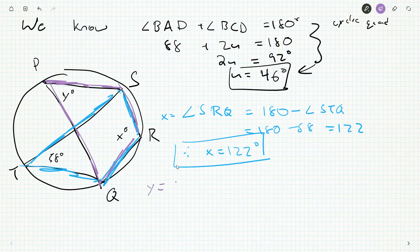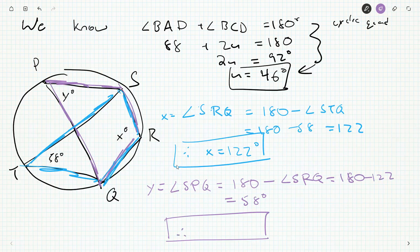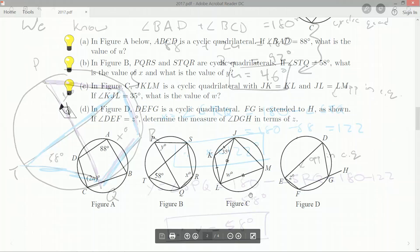Now y is angle SPQ which is opposite angle SRQ, and we just worked out that's 122 degrees. So 180 minus 122, that's going to be just 58. Therefore y is 58 degrees. If you wanted to justify, you'd say it's opposite angle in a cyclic quadrilateral, but I don't think those are necessary. Just the calculations are enough.